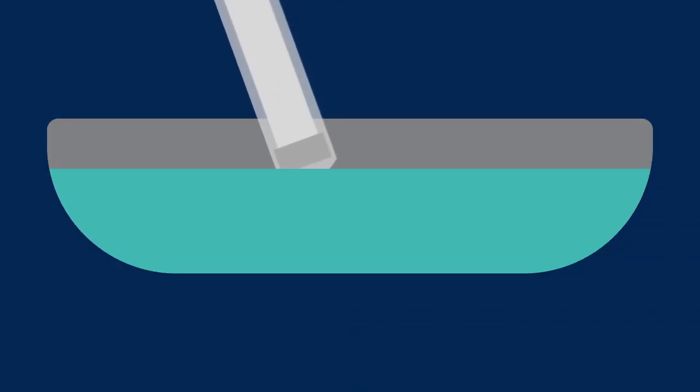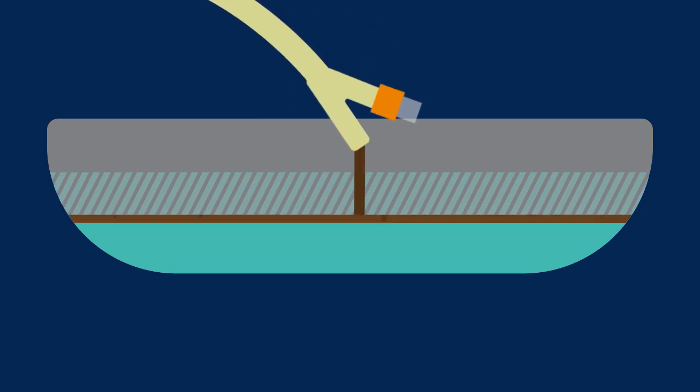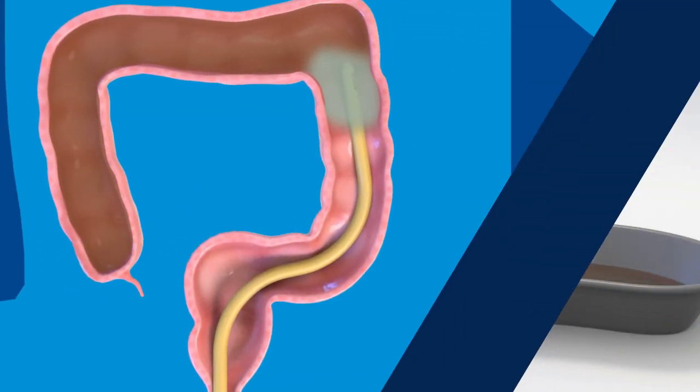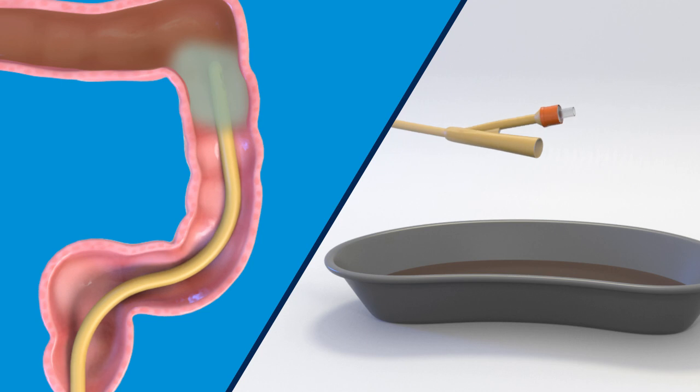If the amount of saline you inject into the rectum is more than the amount of fluid that returns to the basin, then there is extra fluid in the rectum. To drain the extra fluid, try moving the catheter in and out while twisting.